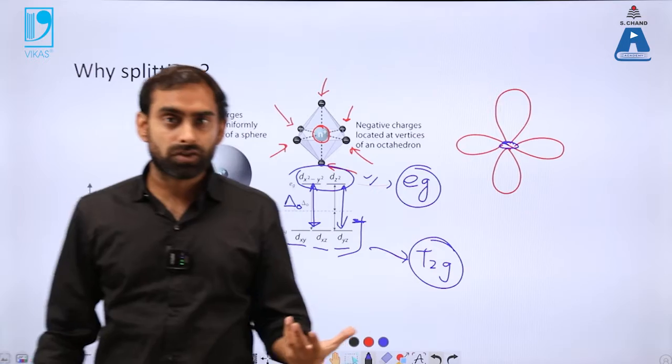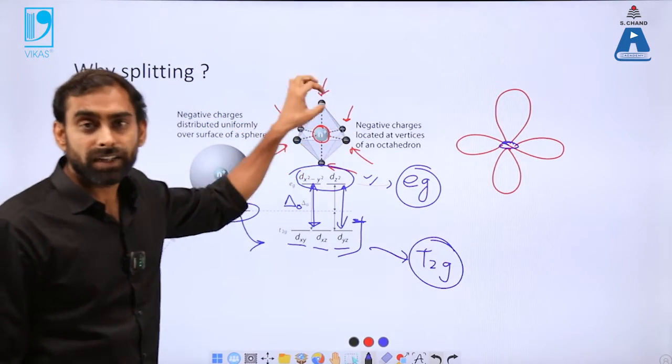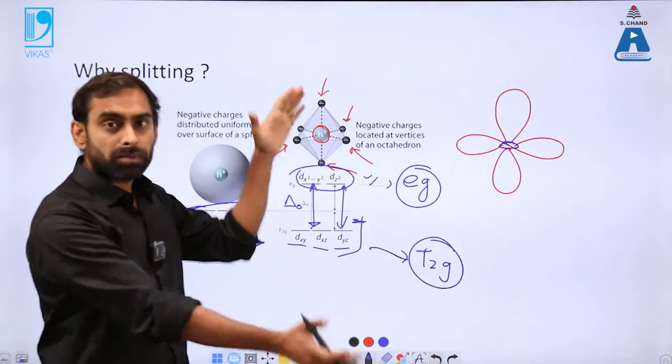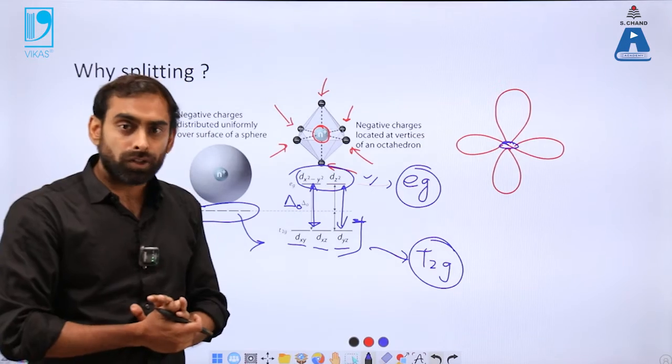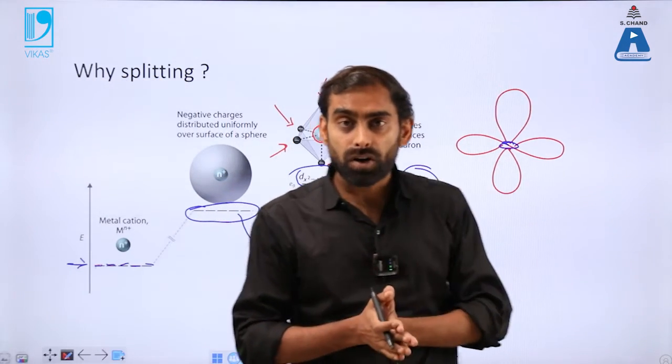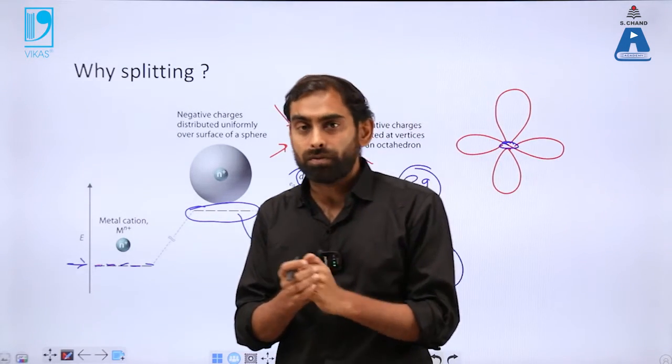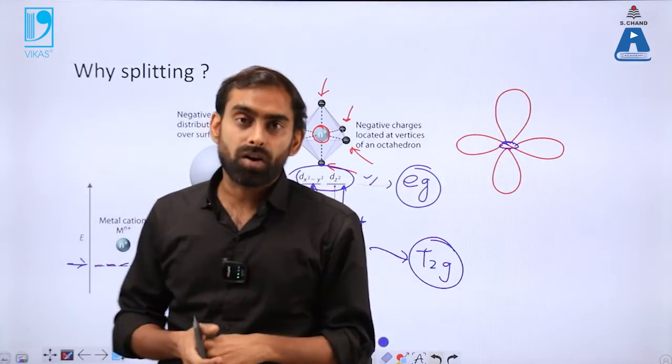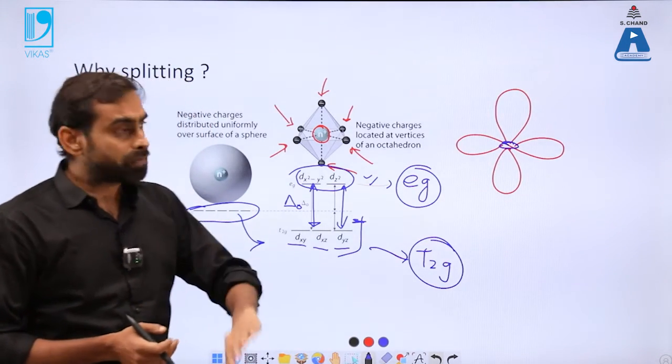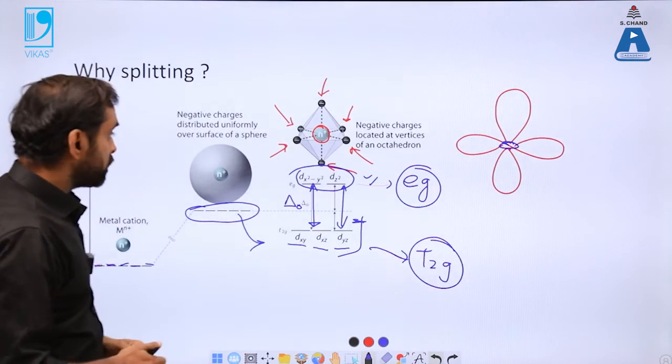So this delta naught or the amount of energy gap which is created, it depends on a lot of factors. It is not always constant, but it is basically dependent on what kind of ligands are coming close to this metal ion. More powerful a ligand is, more powerful splitting it can do. So on that basis, we can also define ligands as weak ligands or strong ligands. When we are looking at the crystal structures of metals, especially metal complexes, we can compare different type of metal complexes. Some of them can have a higher gap, some of them can have a lower gap.